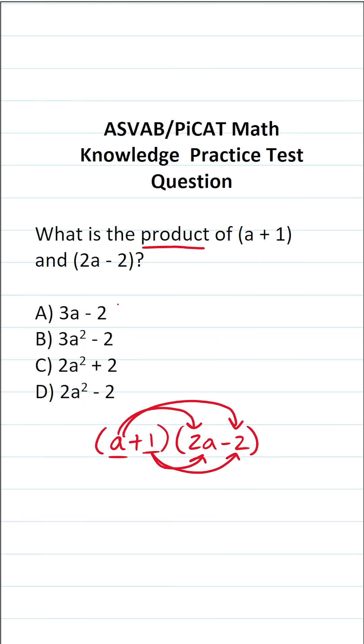What is A times 2A? That's going to be 2A squared. What is A times negative 2? Again, a positive times a negative is going to be a negative. So A times negative 2 is negative 2A.